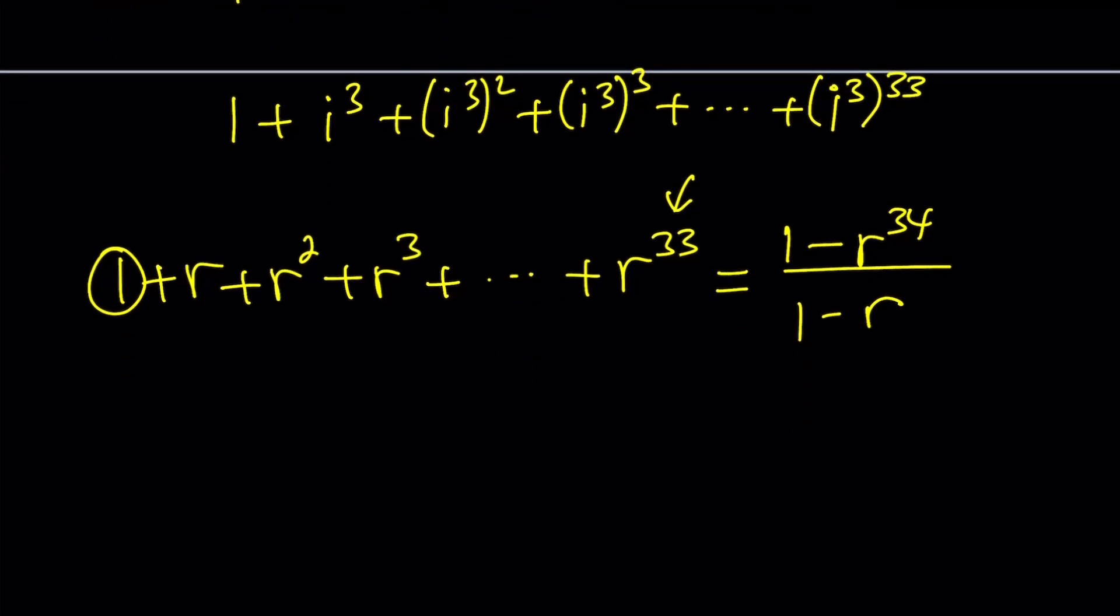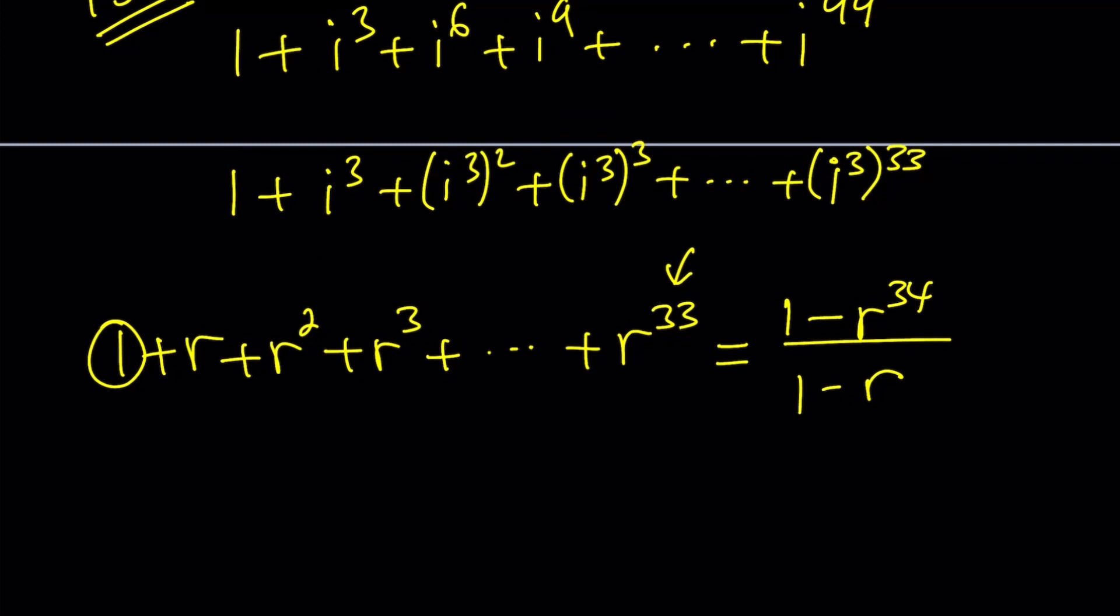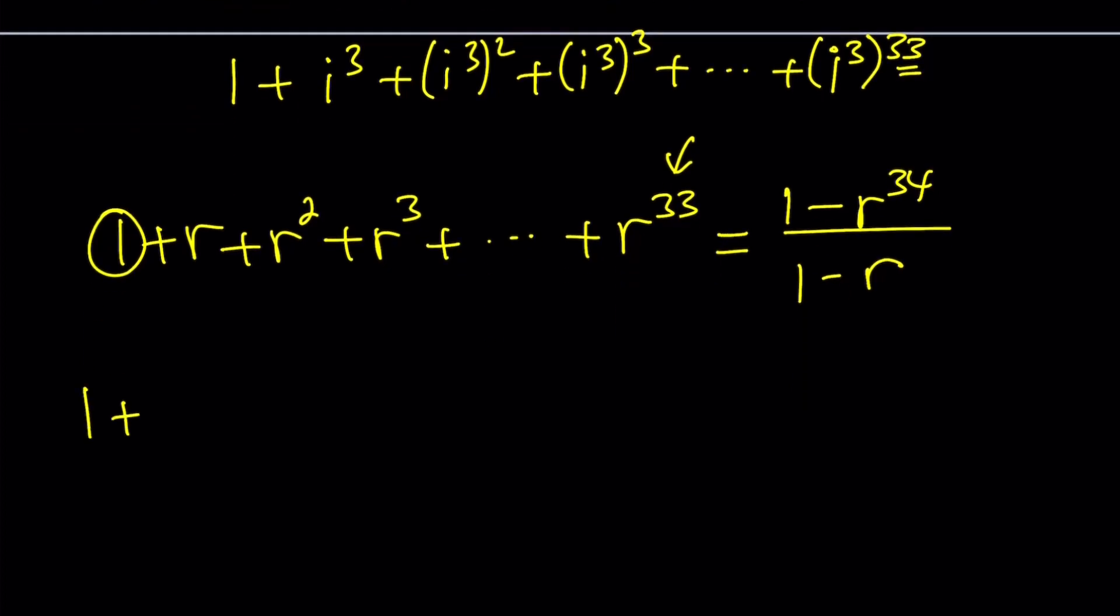By using this formula, I gave you the specific version for n equals 33. If you apply it to our sum, it's going to be 1 minus, since r is i cubed, you have to replace r with i cubed. Be careful not with i. We're going to write 1 minus i cubed to the power 34, divided by 1 minus i cubed. And then we've got to simplify this.